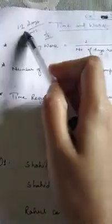To summarize: if a certain work is completed in 12 days by somebody, and you have to find out his 1-day work — how much work he completed in 1 day — then use the formula: 1-day work is equal to 1 by the number of days required to complete the work.